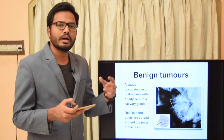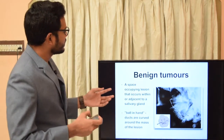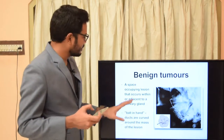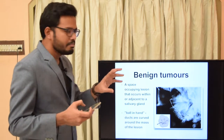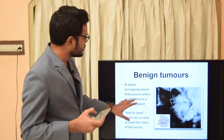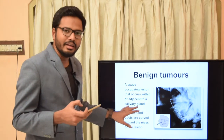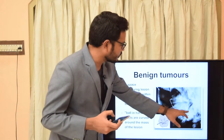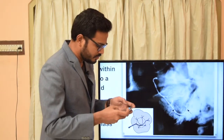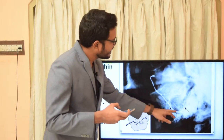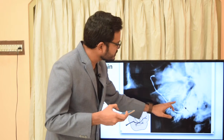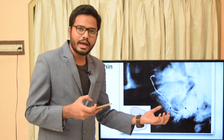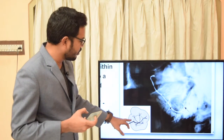Now coming to another sialographic appearance: benign tumors usually have a ball in hand appearance. A space-occupying lesion or any mass which occupies the central portion or is present adjacent to the salivary gland gives this kind of ball in hand appearance. You can see the ducts are curved around the mass of the lesion. It can be a benign tumor, and you can see various ducts encircling this space-occupying lesion giving a ball in hand appearance. This is a schematic representation of ball in hand appearance.